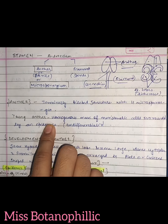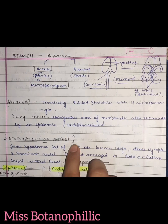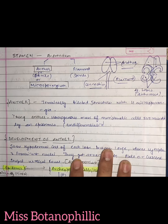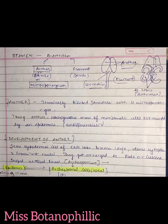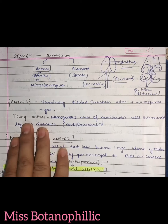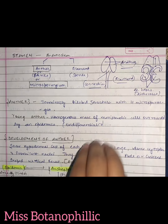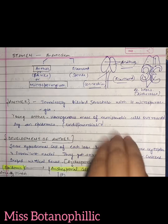The young anther is a homogenous mass of meristematic cells surrounded by an epidermis. When we talk about the development of the anther, we consider the young stage and the mature stage. The young anther undergoes differentiation to become the differentiated anther, which we also call the mature anther.